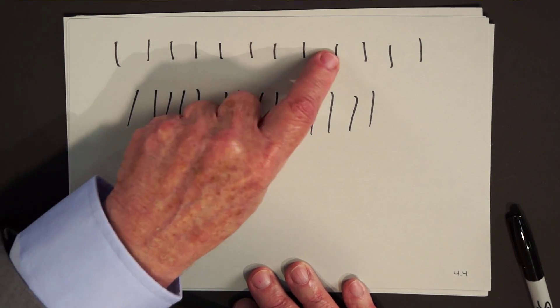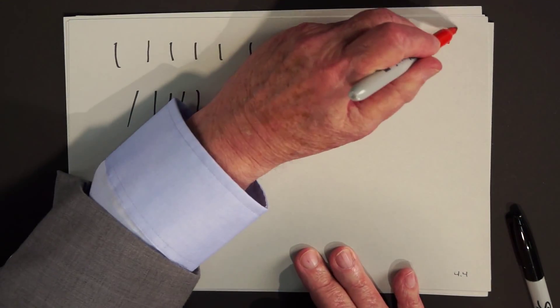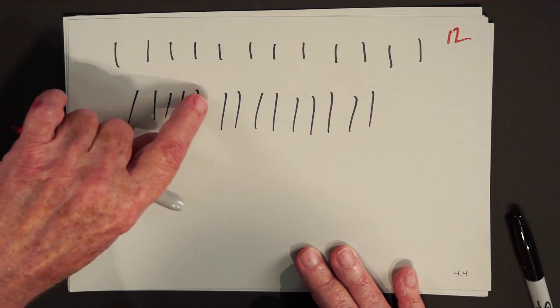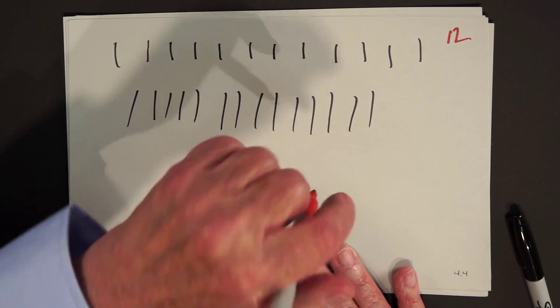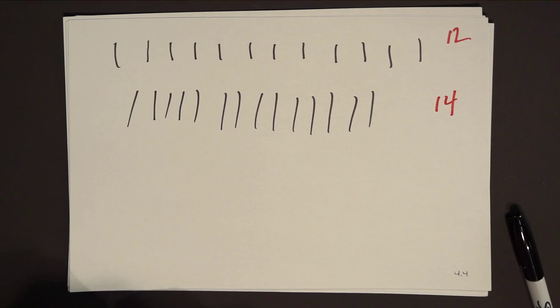No. You say, well, let's count them. One, two, three, four, five, six, seven, eight, nine, ten, eleven, twelve. One, two, three, four, five, six, seven, eight, nine, ten, eleven, twelve, thirteen, fourteen. Ah, you say, oh, it's easy. This row has two more than this.